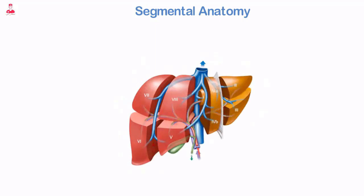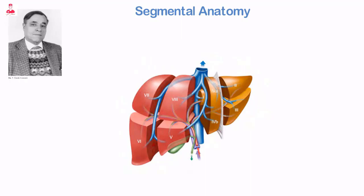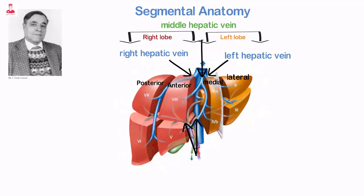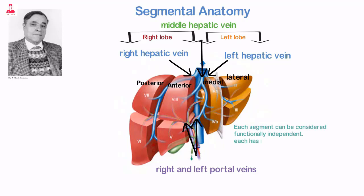Current practice favors the division of the liver into eight segments according to its vascular supply, which can aid in surgical resection. According to the French anatomist Couinaud, the liver can be divided into segments based on the branching of the portal and hepatic veins. The three main hepatic veins divide the liver longitudinally into four sections. The middle hepatic vein divides the liver into right and left lobes. The right lobe is divided into anterior and posterior sections by the right hepatic vein, and the left lobe is divided into medial and lateral sections by the left hepatic vein. Each section is then subdivided transversely by the right and left portal veins, creating eight segments. Each segment can be considered functionally independent, with its own branch of the hepatic artery, portal vein, and bile duct, and is drained by a branch of the hepatic veins.